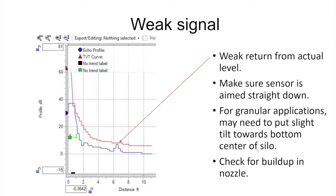In this example we have a very weak return from our actual level. In fact looking at the graph here, the echo does not even exceed the red TVT line so it will not be considered as a potential actual level.